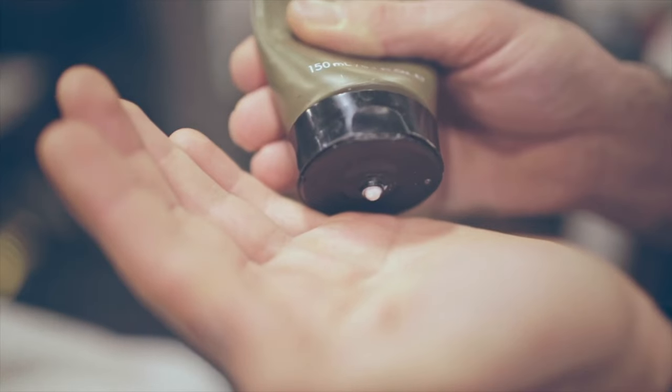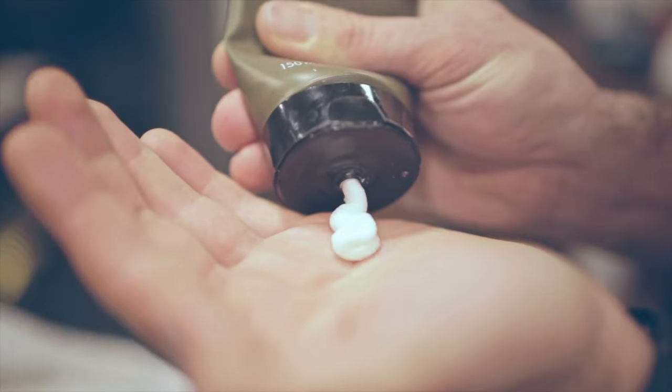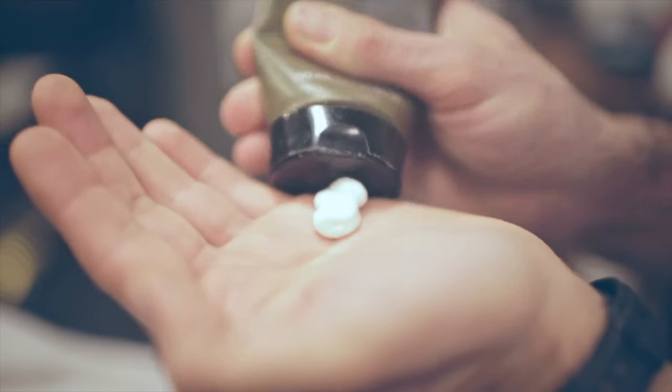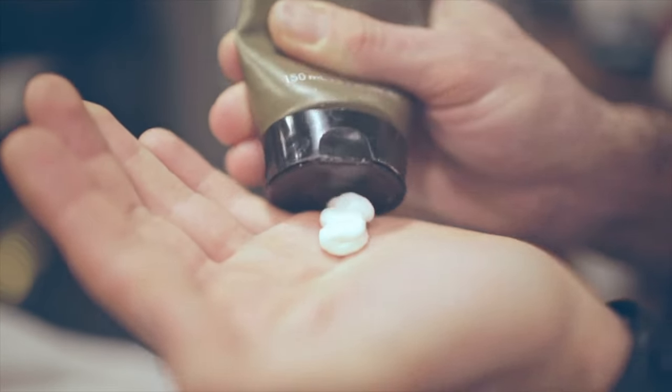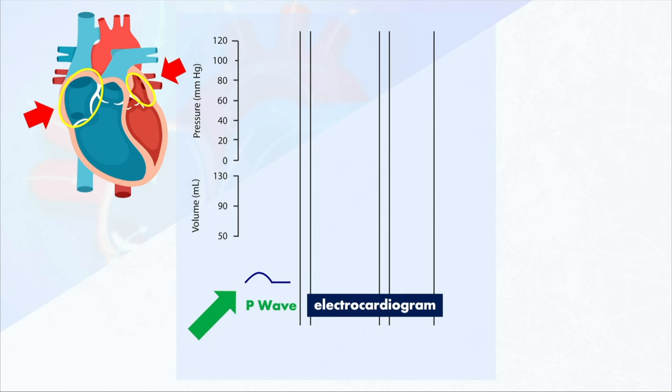Now we have a signal, and that signal is going to cause the atria to contract, which is atrial systole. When the atria contracts, what do you think that's going to do to the pressure in the atria? Think about it this way: if you have a container with fluid, or even lotion, and you squeeze it, the squeezing increases the pressure in the container and pushes whatever is inside out. Well, when the atria contracts, that's basically like squeezing the atria, and the squeezing increases the pressure in the atria.